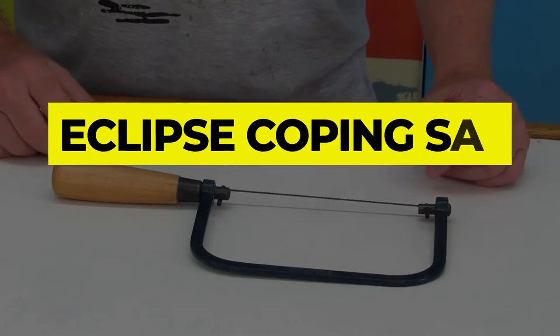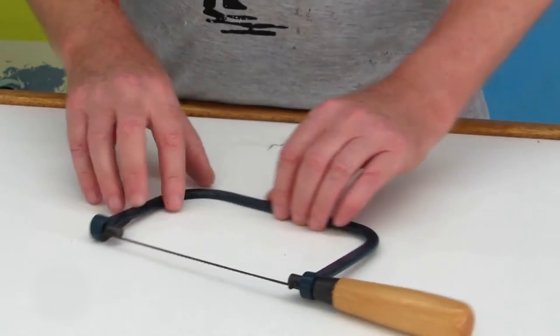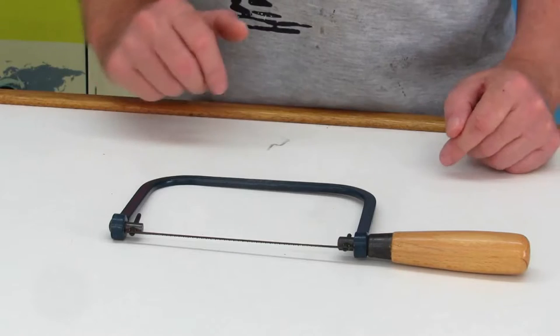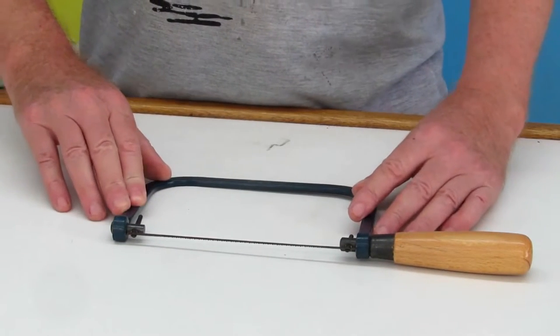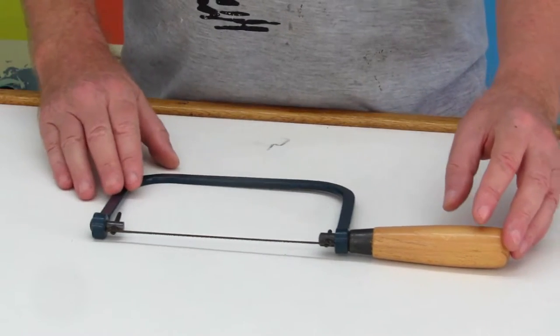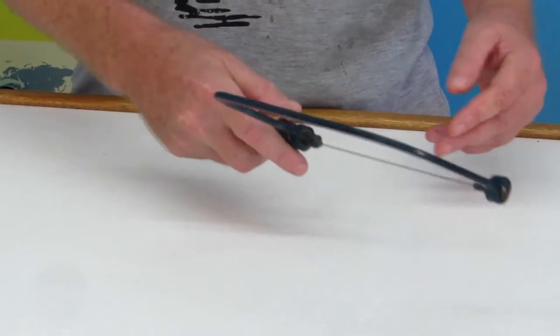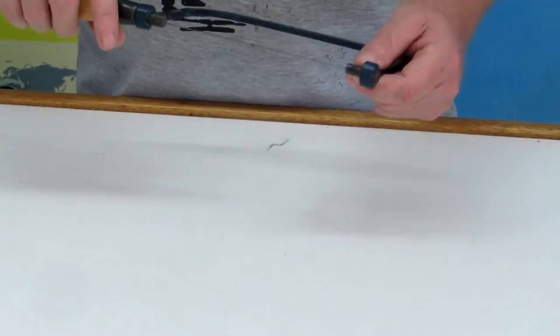Number 2: Eclipse Coping Saw. Eclipse's coping saw is a fan favorite due to its strong frame, which helps the saw slice through wood and other trim materials flawlessly. It has a blade that is extra sharp. The tension may be easily adjusted. While several reviews praised it for its trim work, it's also excellent for creating desks and tables, and it lasts for years.